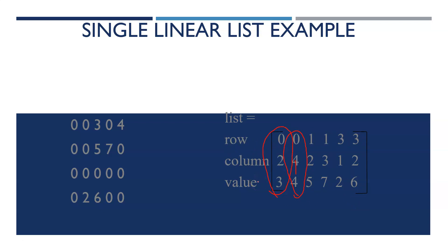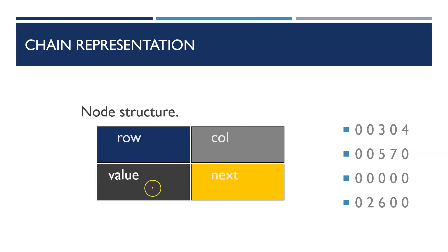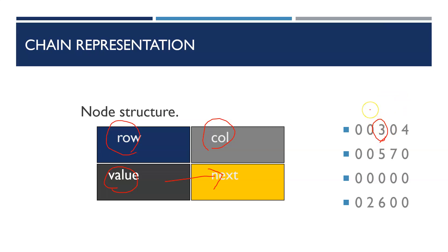In the first method, we use the single linear list — the chain representation. It's very easy. One node stores row, column, value, and one next pointer as a linked list. So, for the value 3 at row 0, column, the actual value is 3 and it points to the next node, then next node, and so on: 5, 7, 2, 6.